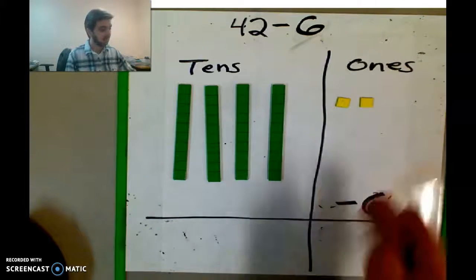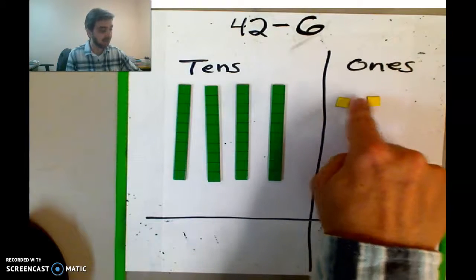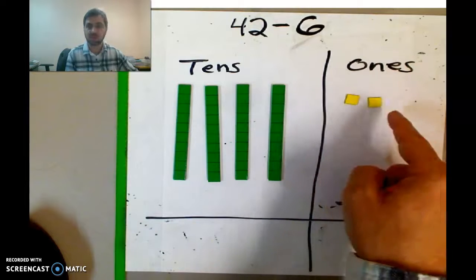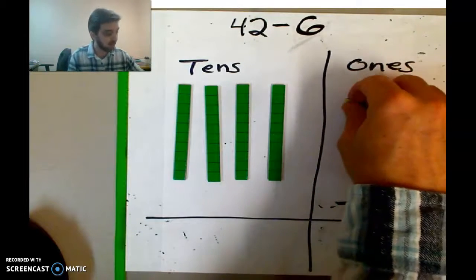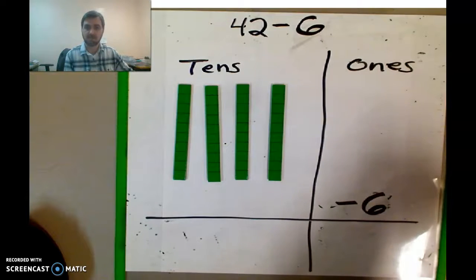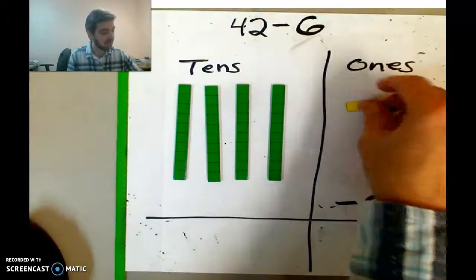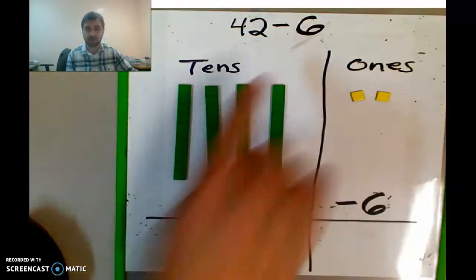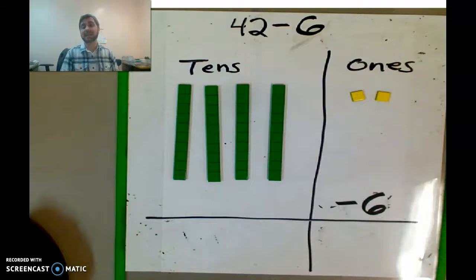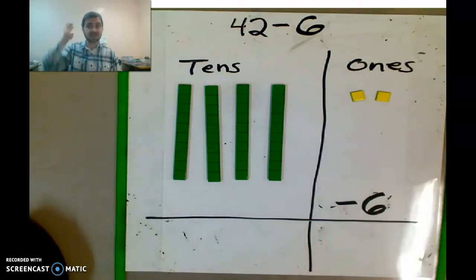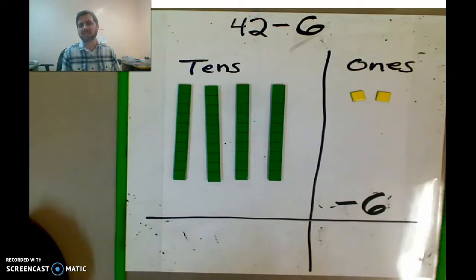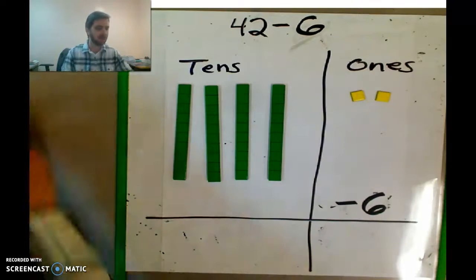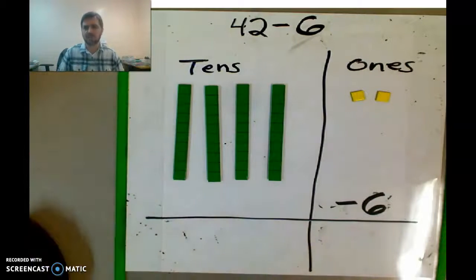Yeah, we can't — we don't have enough loose Skittles to subtract. I could take away 2, but where am I going to get more Skittles? So let's say that I have 42 Skittles and I want to give one of my sisters 6 Skittles because she's like, hey, can I have 6 Skittles? I'm like, sure — I'm a nice big brother. So the question is where are those Skittles going to come from?